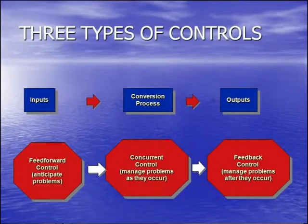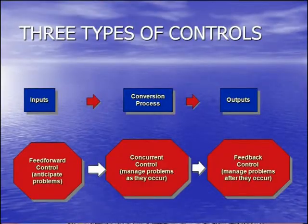Do we have the right sort of materials? Do we have the right sort of technology? And can we, through this control, anticipate the problems and resolve them before they occur? So this is feed forward control. When things are being processed, that is concurrent control. You have to watch the process and take note of any deviations or variances. Sometimes you have to stop the process and redo things. So this is concurrent control.